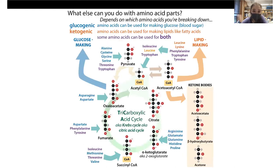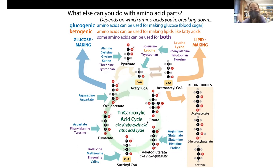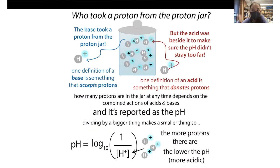Glycine is what we call glucogenic, meaning it can be used for making glucose or blood sugar. Glycine can be converted to pyruvate, which can enter the tricarboxylic acid cycle — also called the Krebs cycle or citric acid cycle — which can be used to make glucose. In the lab, we sometimes use glycine as a pH buffer.